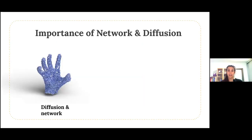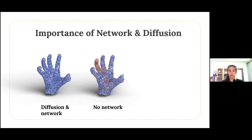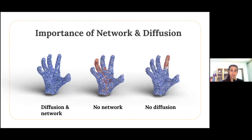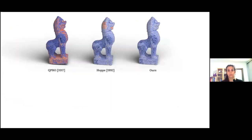Our diffusion and network-predicted flip probabilities are both crucial for obtaining desirable results. If we don't use the network-predicted flip probabilities to weight the dipole propagation, we're left with many errors which the diffusion step can't fix. And if we don't use the diffusion step, some lingering errors from the network-predicted phase will remain. Our method even scales to millions of points, taking approximately 13 minutes for one million points, which is a very large amount of points, and here are the corresponding reconstructions.